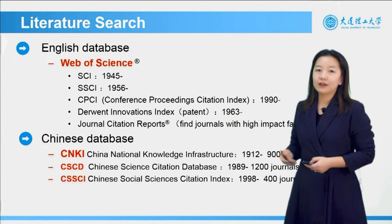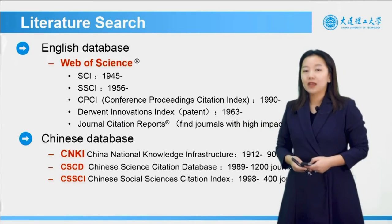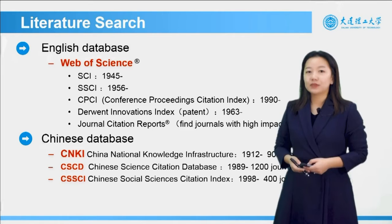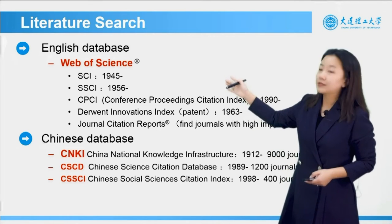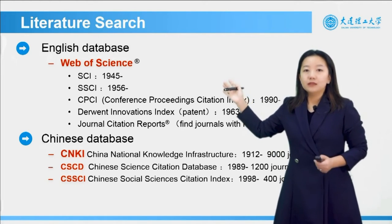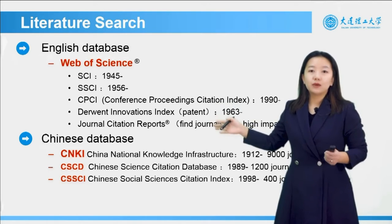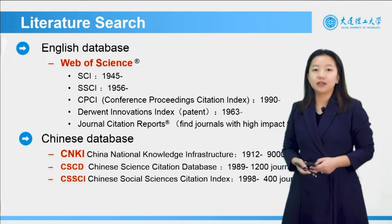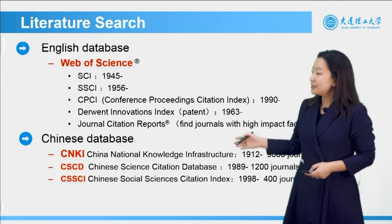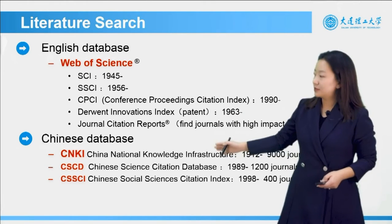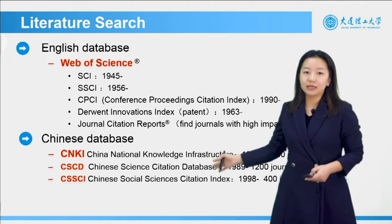Here I list several databases mentioned in the last class. For English databases, the commonly used one is Web of Science, which contains SCI, SICI, CPCI, and the Derwent Innovation Index, as well as Journal Citation Reports. You can find journals with high impact factors in your own disciplines. For Chinese databases, we have CNKI, CSCD, and CSICI.